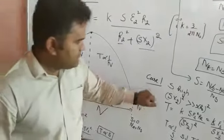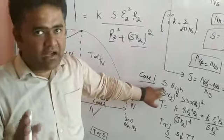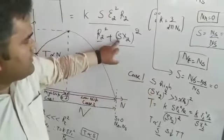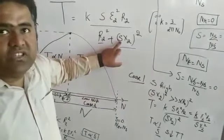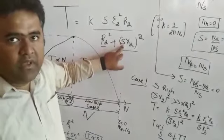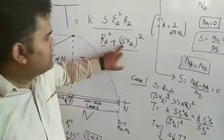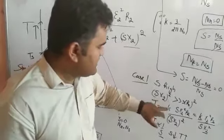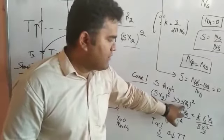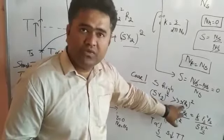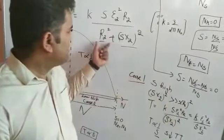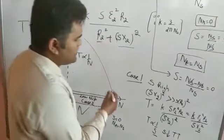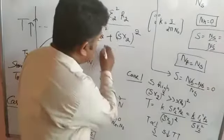Case 1 — high slip. If the slip value is high, then SX2 squared will be much greater than R2 squared. In comparison, SX2 squared is very much greater than R2 squared, so I can ignore the R2 squared term in the denominator.